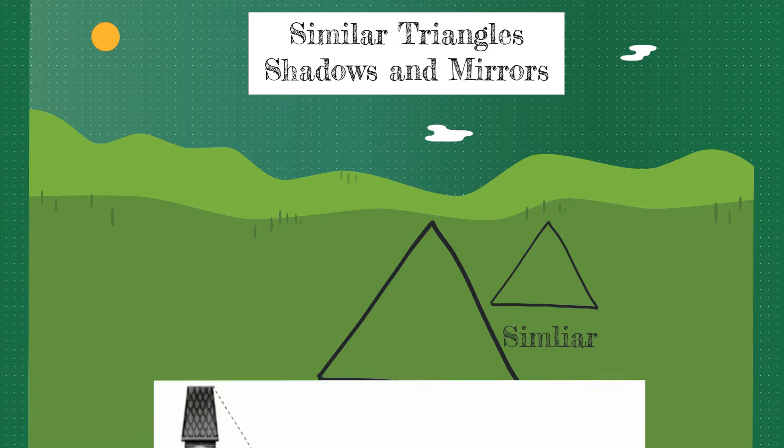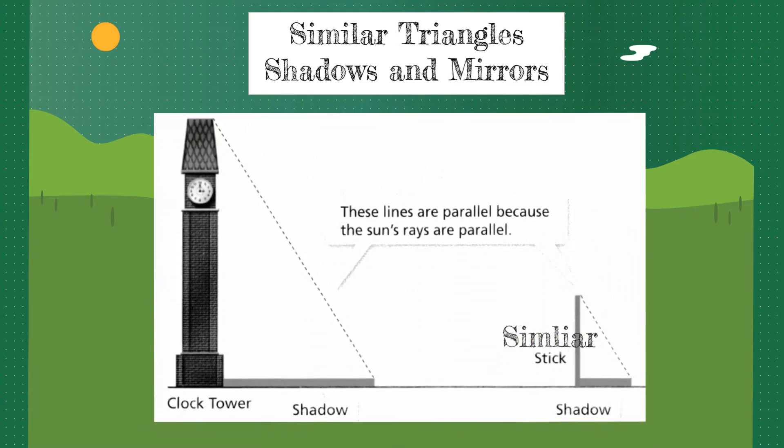So look at this example. If I have the sun beating down, it's gonna create a shadow. And as long as you catch that shadow at exactly the same time, those triangles are gonna be similar.